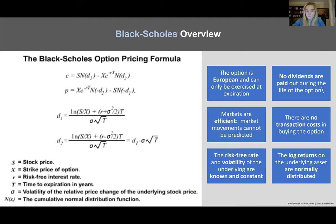Obviously these assumptions are a bit hard to ensure in practice, but they're typically accepted to some degree. With regard to dividends, no dividends are paid out during the life of the option, and there are no transaction costs in buying the options. However, the most important assumption from Black-Scholes is that the log returns on the underlying asset are normally distributed — something that comes into question when applying option pricing theory to other areas of finance.